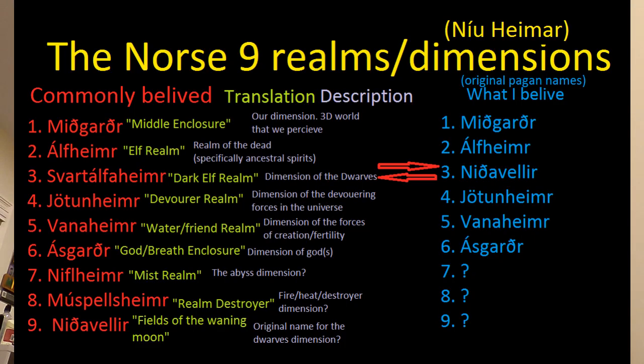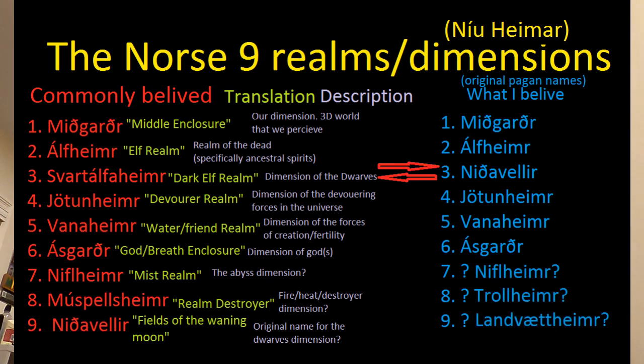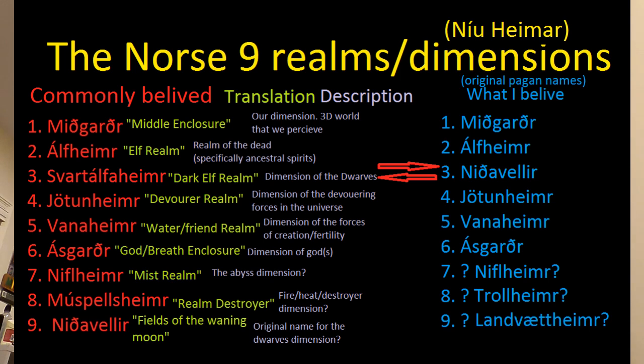That brings us to six basically confirmed dimensions that we know pagans believed in. The remaining three are questionable. I would probably put Niflheim in here too, maybe, but I think the understanding of exactly what it is is very difficult to determine. This is the best that I think we've got for the nine worlds, but like I said, these could all be wrong and we don't really have any old sources that list the nine realms that we all know. All we know for sure is that there are nine.